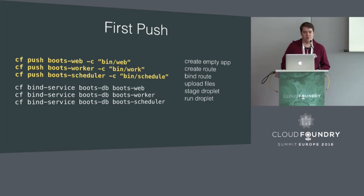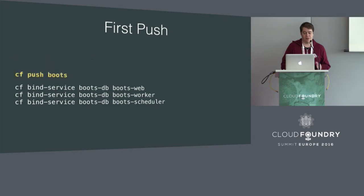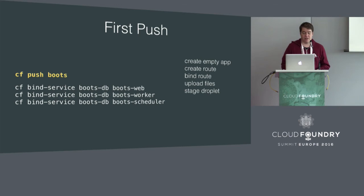In v3, this looks a little bit different. All you do is one single push. It's got the exact same steps, except because we can be smart about one application having three different processes, we only need to do one staging. So as you can see, we just create the empty app, the route, upload the files, and do the staging just once. That feels a lot better - it's a lot faster, it just makes more sense.